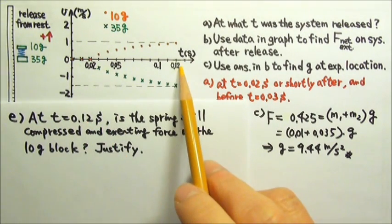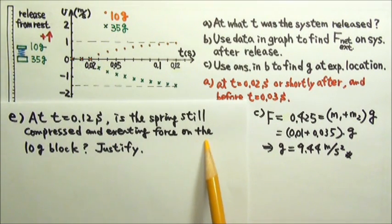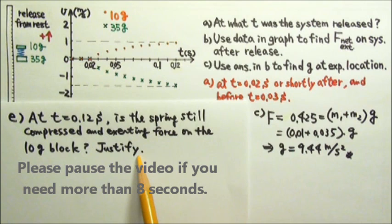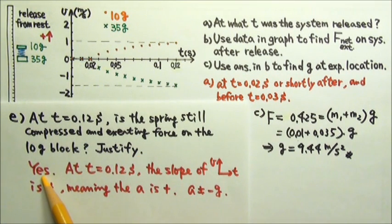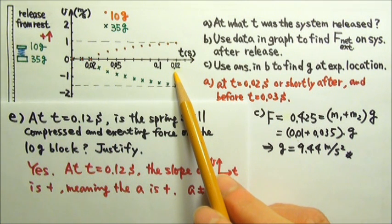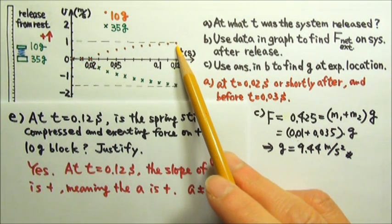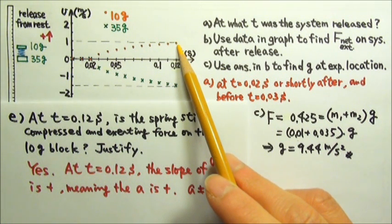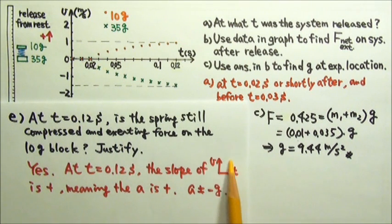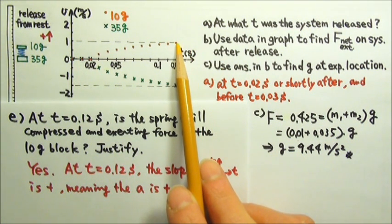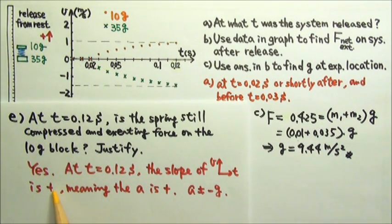Part E: At t = 0.12 seconds, is the spring still compressed and exerting force on the 10-gram block? Yes — at 0.12 seconds, the spring is still compressed and exerting force on the 10-gram block. Because if the spring no longer exerted force, the 10-gram block would only be under the influence of gravity, giving it a downward acceleration equal to g. Acceleration is the slope of the velocity-time graph, and as we can see, the slope at t = 0.12 seconds is still positive, meaning the 10-gram block still has an upward acceleration, not the downward g.